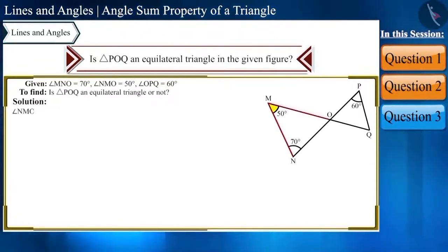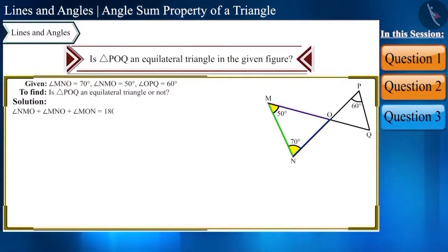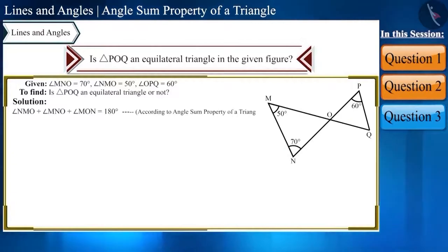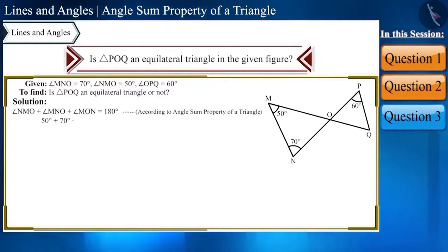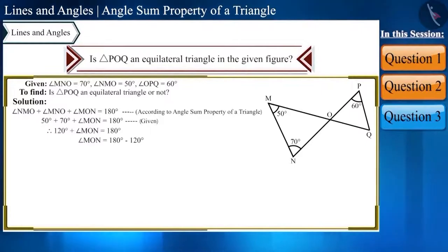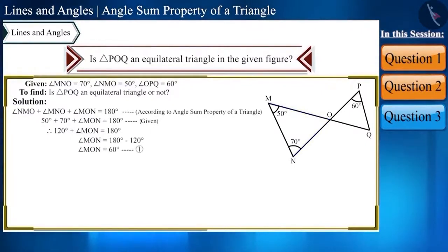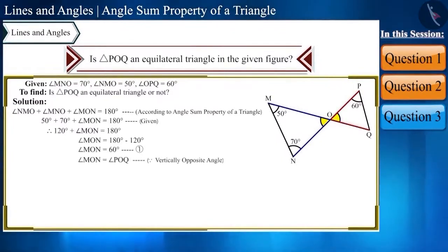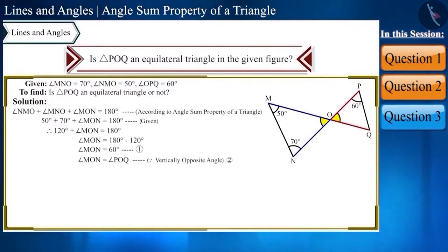In triangle MNO, angle NMO plus angle MNO plus angle MON equals 180 degrees by the angle sum property. Substituting: 50 degrees plus 70 degrees plus angle MON equals 180 degrees, so angle MON equals 60 degrees. Since angle MON and angle POQ are vertically opposite angles, angle POQ is also equal to 60 degrees.